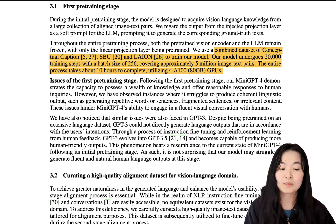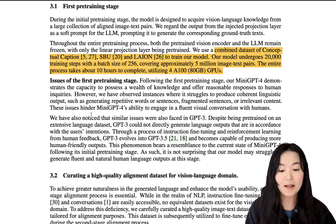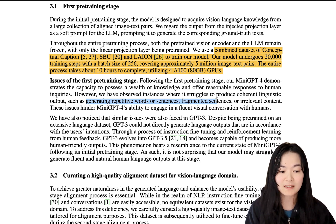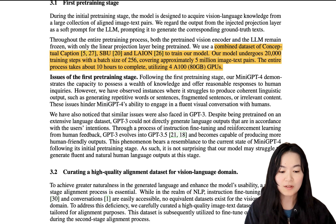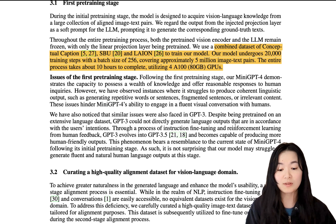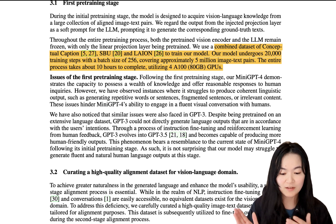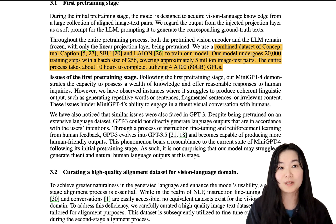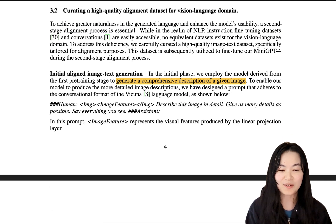However, there is an issue with this training step — they were struggling to produce coherent linguistic output, such as generating fragmented sentences or irrelevant content. So stage two is fine-tuning. But before they fine-tune the model, they need to have a better quality dataset.